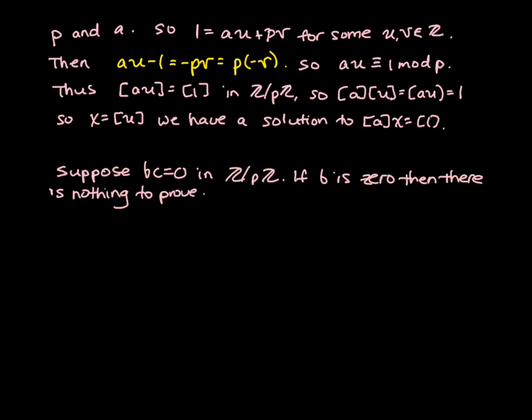So suppose b is not equal to 0. What happens? Then because this is a non-zero element, we have that the equation bx equals 1 has a solution for some x in Z mod pZ.